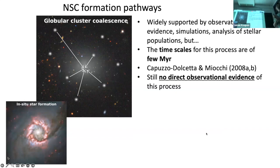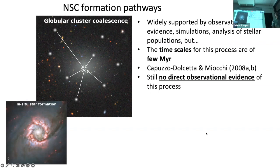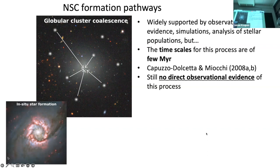There are two main formation pathways for nuclear star clusters. The first is globular cluster coalescence — widely supported by observations and simulations — but the timescale is very short, of order a few megayears, so it's very hard to observe and has not been directly observed yet. What happens is globular clusters around the center of a galaxy all come together and build up the nuclear star cluster. The alternative is in-situ star formation: gas sitting in or around the center forms stars which then coalesce into the nuclear star cluster.